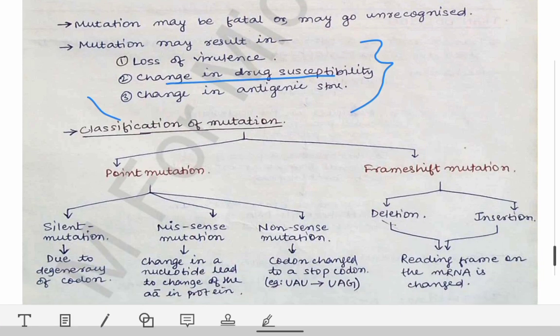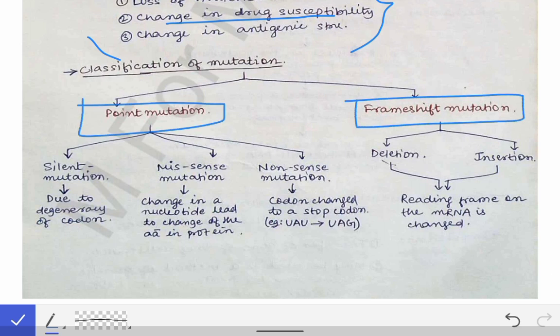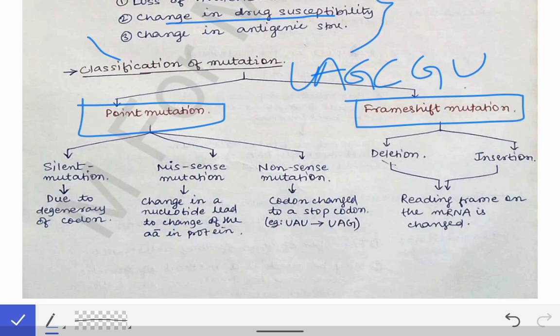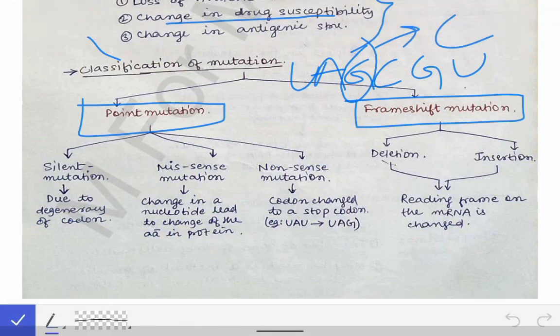Mutations are of two types: point mutation and frameshift mutation. Point mutation means the substitution of a particular nucleotide by another nucleotide. For example, if an mRNA sequence is U-A-G-C-G-U and the G is replaced by C, that substitution is called a point mutation.